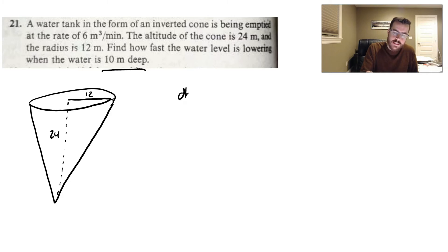So we want to figure out how fast the water height is changing over time when the height is 10 meters. We also know that water is being emptied at a rate of six meters cubed per minute. When you're dealing with cubic units, that's going to be dealing with volume.